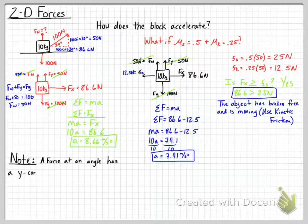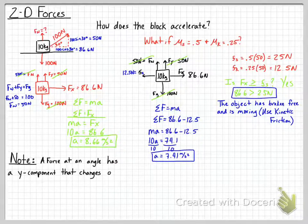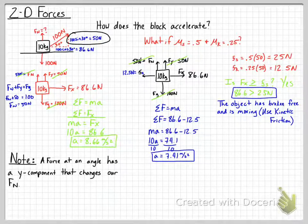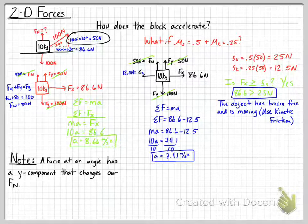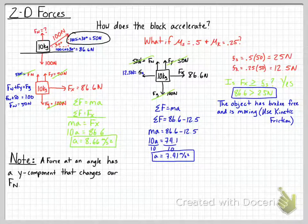A key note: a force at an angle will have a y component that changes the normal force. If we push down on the object, the normal force increases; if we pull up, the normal force decreases. We must separate angled forces into components, and the y component changes the normal force, which in turn changes how friction affects the object.